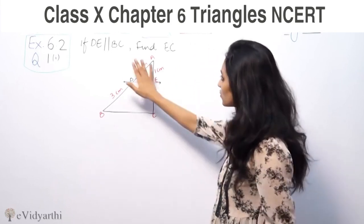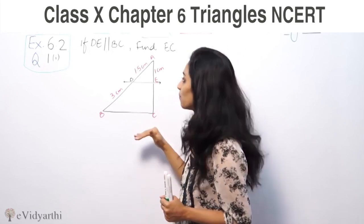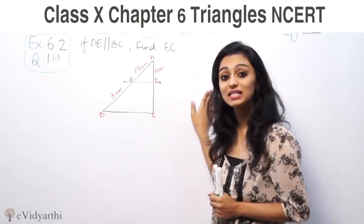This says if DE is parallel to BC, in this figure we have to find EC.